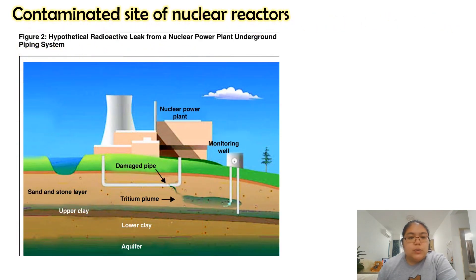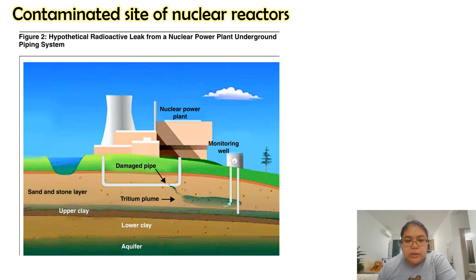The next impact is the contaminated site of the nuclear reactor. Radioactive material can leak from the nuclear power plant through the underground piping system. This is one of the radioactive effects — it damages the pipes. The underground pipes can be damaged by contamination from the nuclear reactor site.